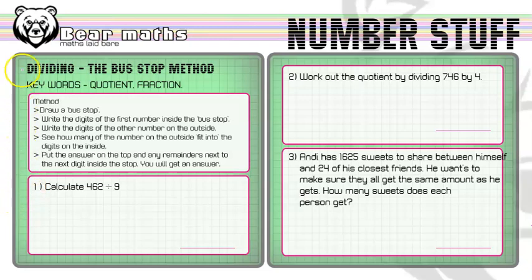So in the first one we've got calculate 462 divided by 9. Basically let's follow the method. Draw a bus stop. There's a bus stop. Now obviously not a lovely artistic picture of a bus stop. This is what the maths bus stop looks like. I'll put it in quotation marks. It's called the bus stop method because you draw this little bus stop here.